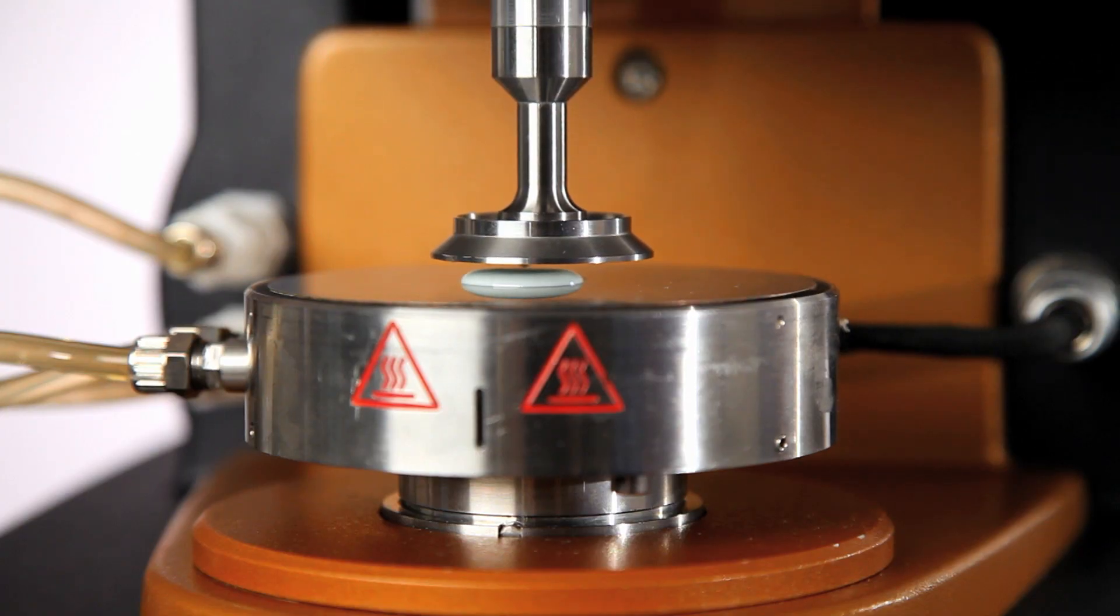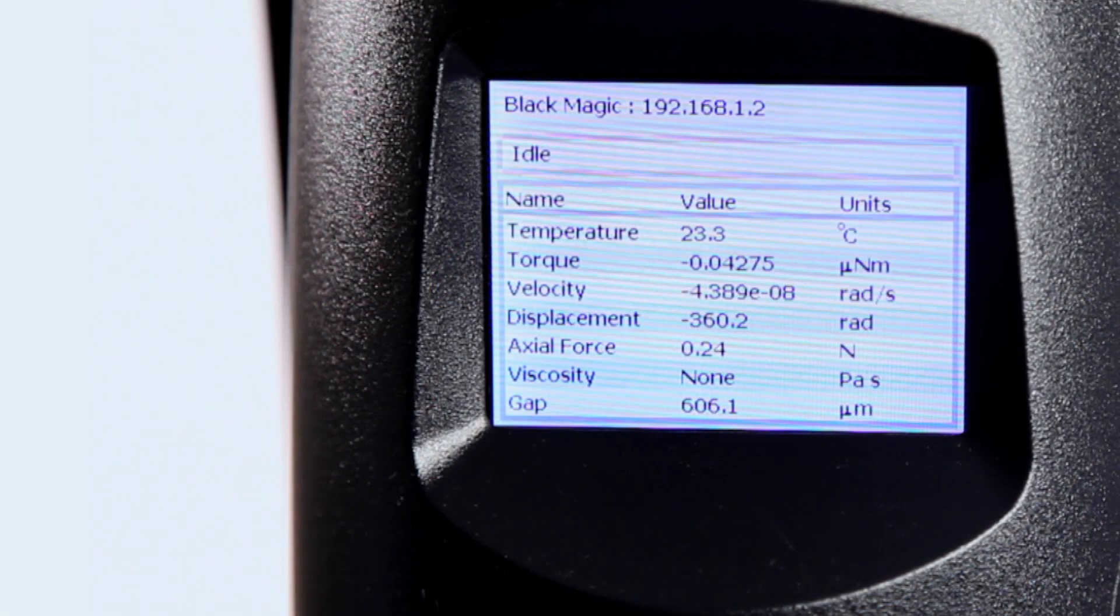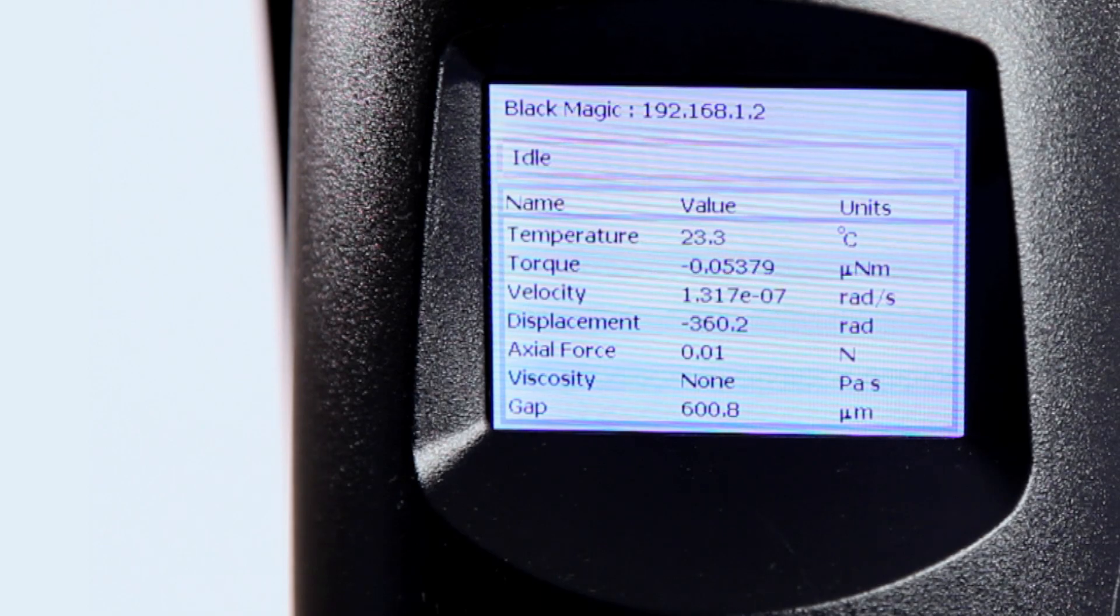When too little of a sample is loaded there will be an incorrect area for the stress calculation. Because of this the resulting viscosity or modulus values would be incorrect.